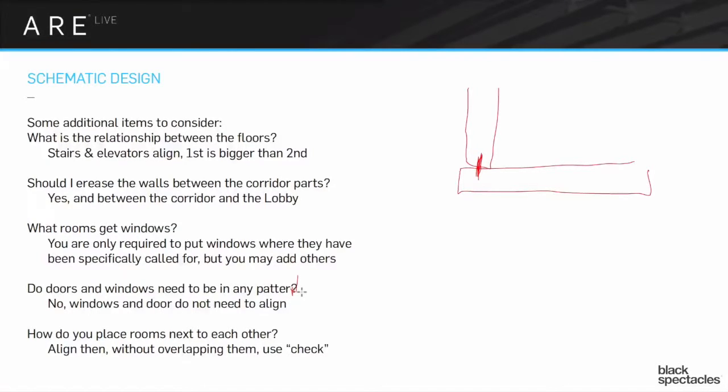And then how do you place rooms next to each other? Well, first thing you're going to do is you're going to put them next to each other. You're going to align them without overlapping them. And you're going to then check it by using the check tool, which will turn them red if they are not, if they're too much overlapped or if they're too far apart from each other. So use the advantages of this fairly simple program.